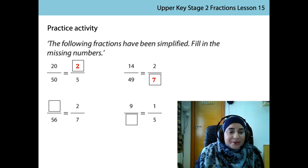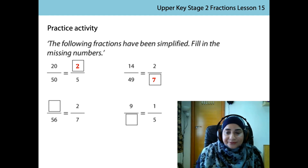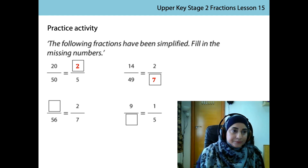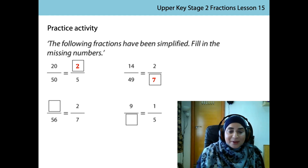In the next two examples, we already have the simplified fraction and we will now be working the other way, so we will need to multiply. To get from 7 to 56, I need to multiply by 8. Therefore, I also need to multiply 2 by 8. 2 multiplied by 8 is 16.